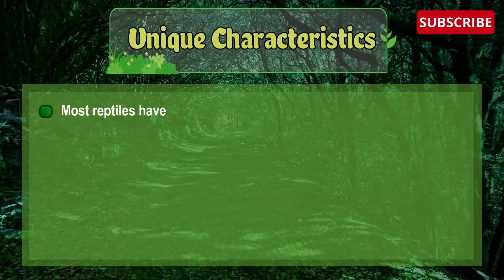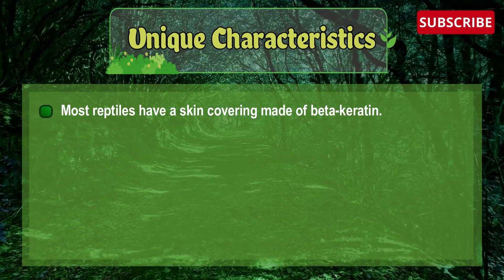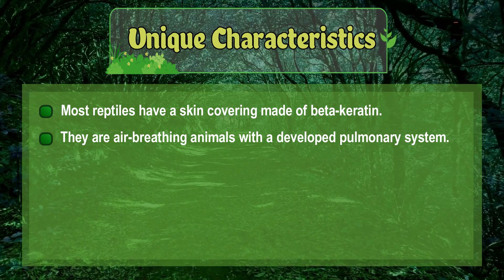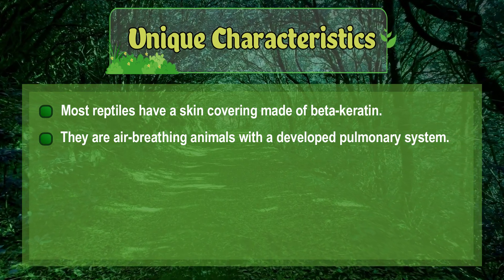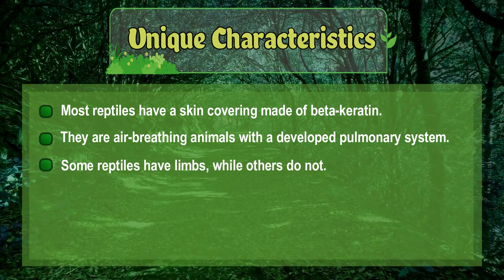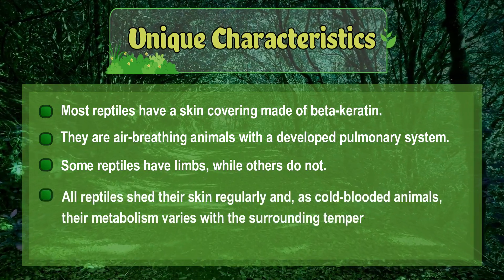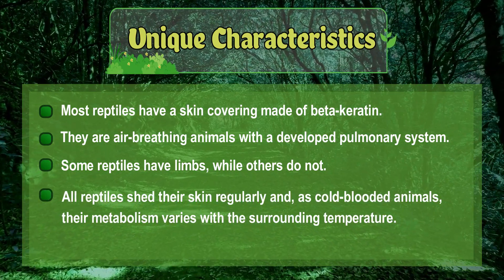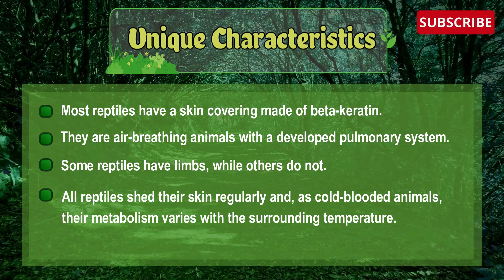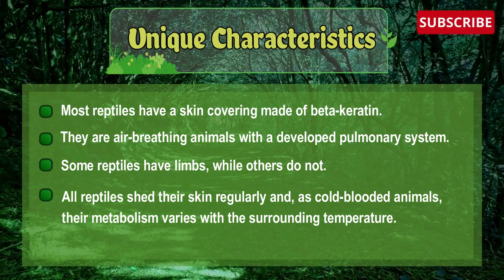Most reptiles have a skin covering made of beta-keratin. They are air-breathing animals with a developed pulmonary system. Some reptiles have limbs while others do not. All reptiles shed their skin regularly and, as cold-blooded animals, their metabolism varies with the surrounding temperature.